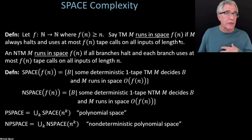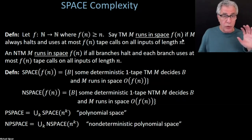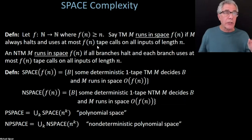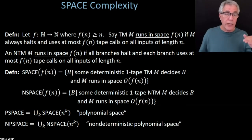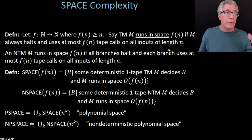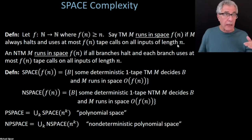We'll say a Turing machine runs in space F(n) if, first of all, the machine is a decider, and it uses at most F(n) tape cells on all inputs of length n. Just like we said for time complexity — the machine has to run within T(n) time on all inputs of length n — here it has to use at most F(n) cells on all inputs of length n.